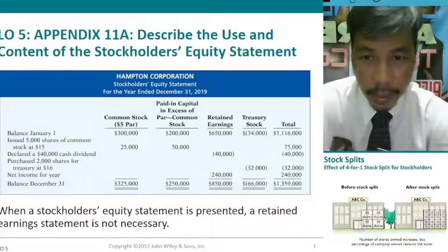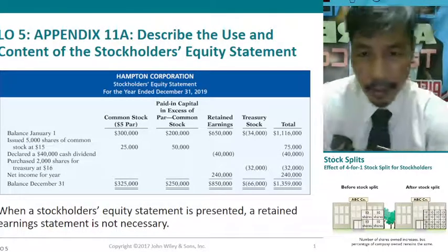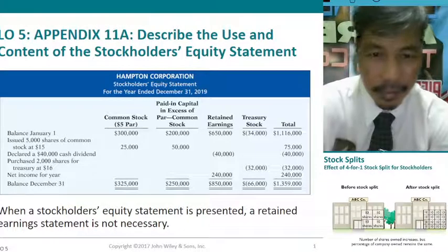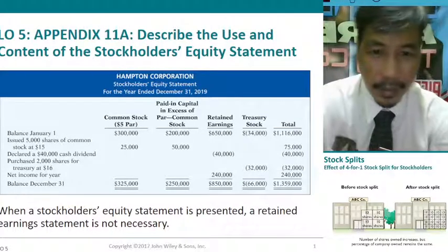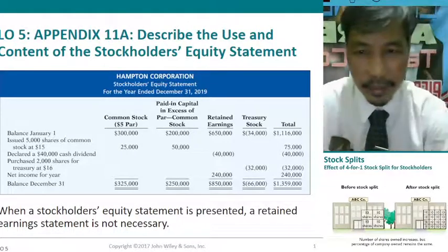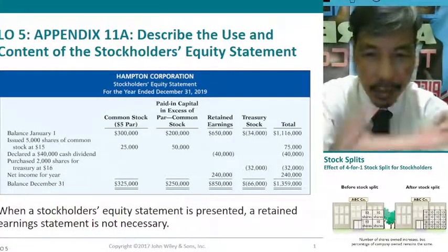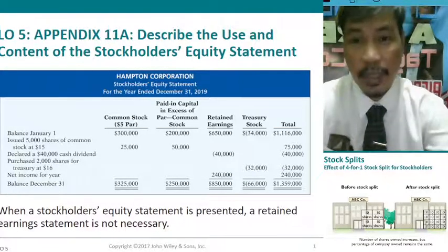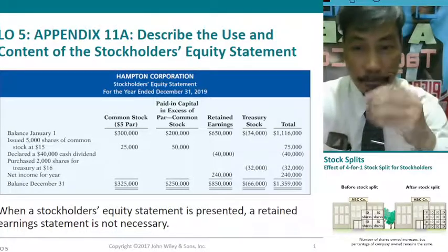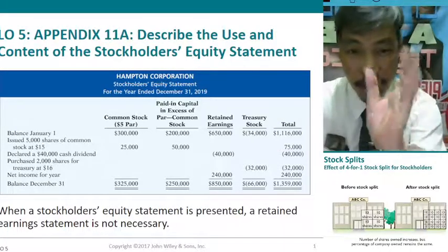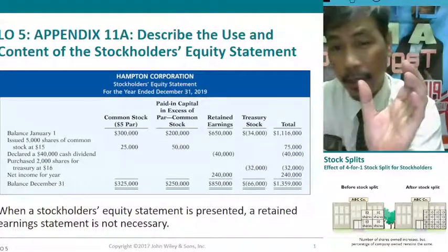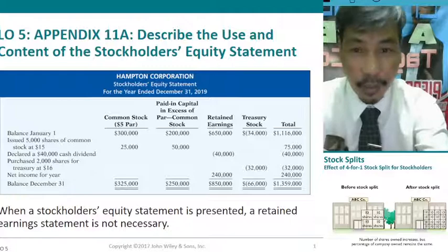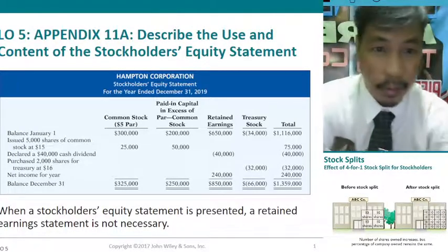The retained earnings section shows the beginning balance as of January 1 and the ending balance as of December 31. The difference includes net income or loss for the year. The only distinction is that dividends declared are recorded in retained earnings on the T-accounts but are reflected here in the statement for the purpose of presenting the information to stockholders.